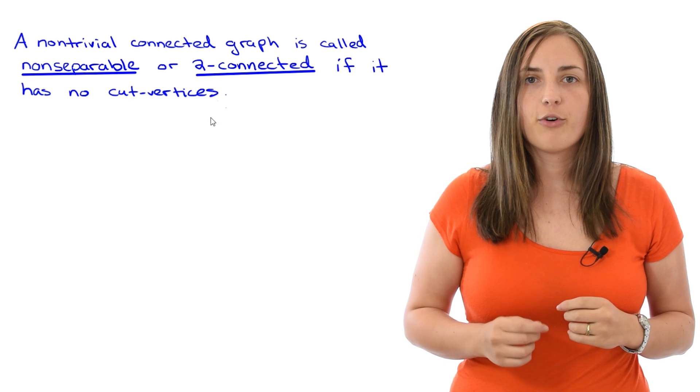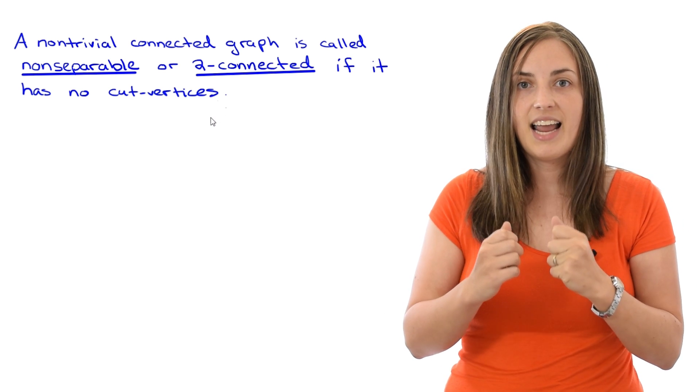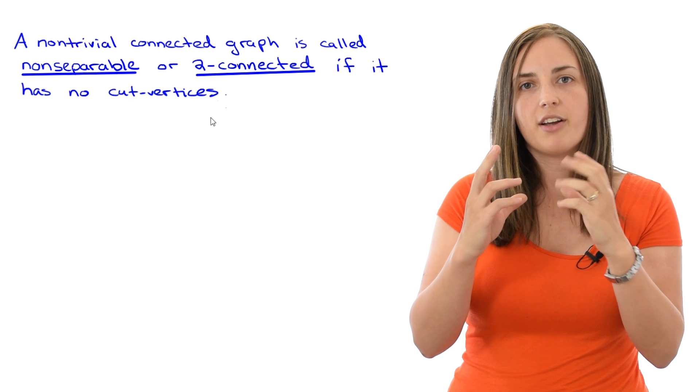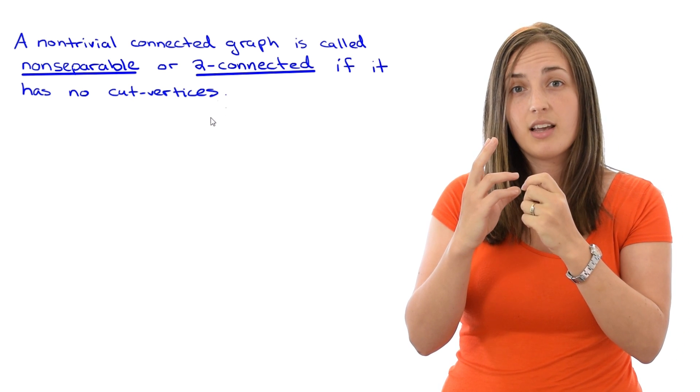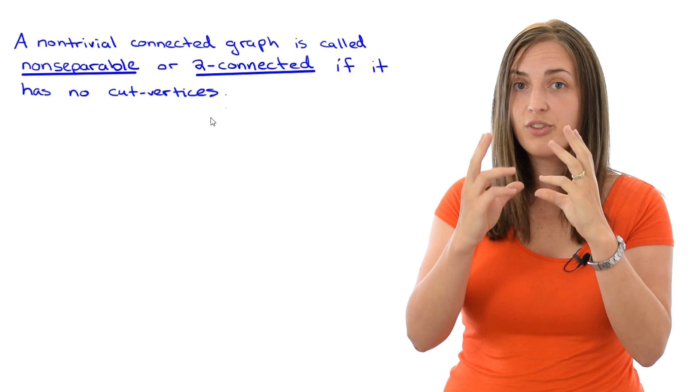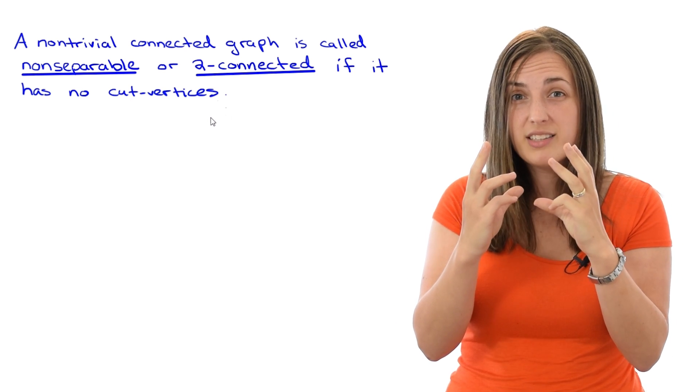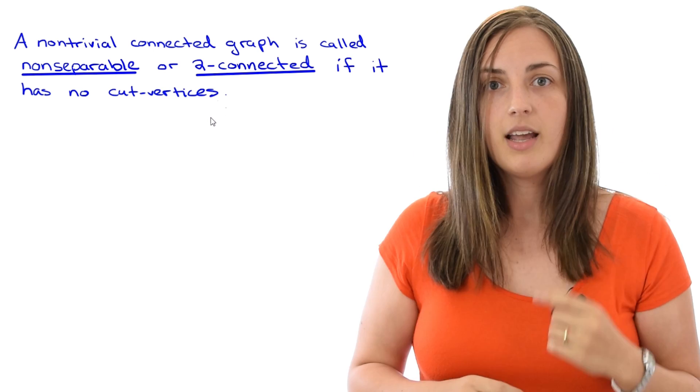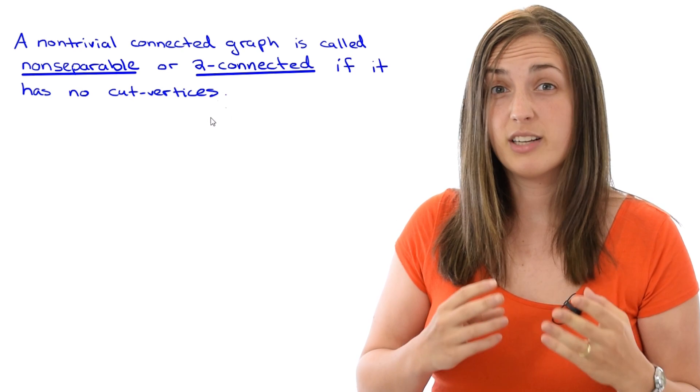If you think about it for a minute, this is like saying it's connected and it's even better than connected. It's 2-connected. Because if you have a connected graph and you remove a cut vertex, that will disconnect the graph. So having no cut vertices means that not only is it connected, but removing something cannot disconnect it. So it's better than connected.